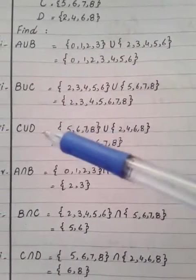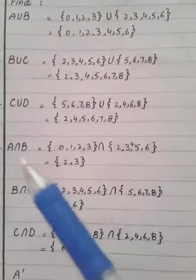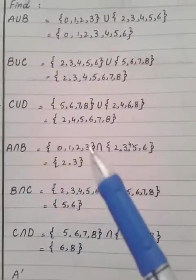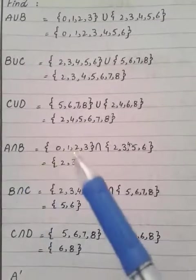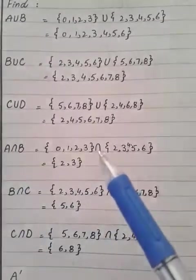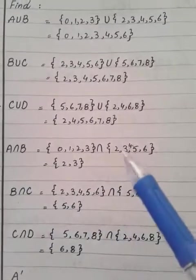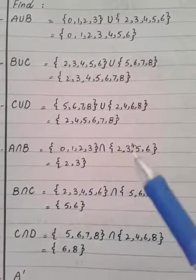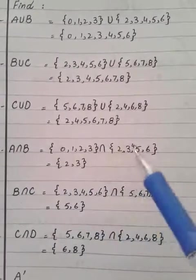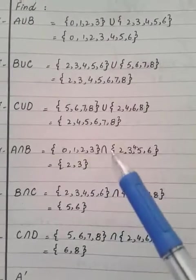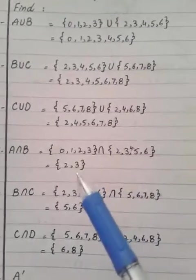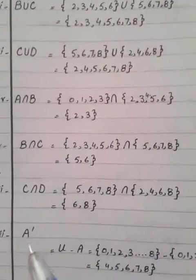For intersection: first write set A, then apply intersection with set B. Look for what is common in both sets — elements 2 and 3 appear in both A and B, so the answer for A intersection B is {2, 3}.